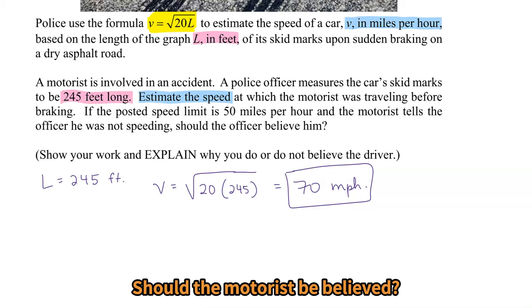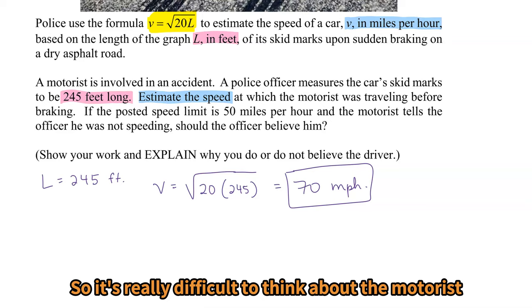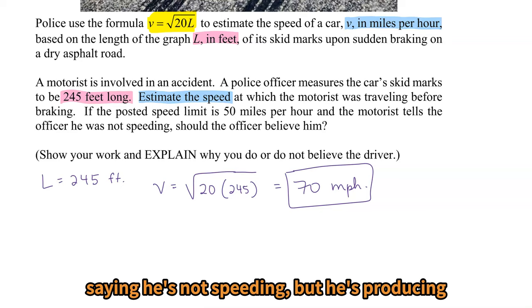Well, 50 miles per hour and 70 miles per hour are very far apart when you think about speeds. So it's really difficult to think about the motorist saying he's not speeding, but he's producing skid marks for a speed of 70 miles per hour.